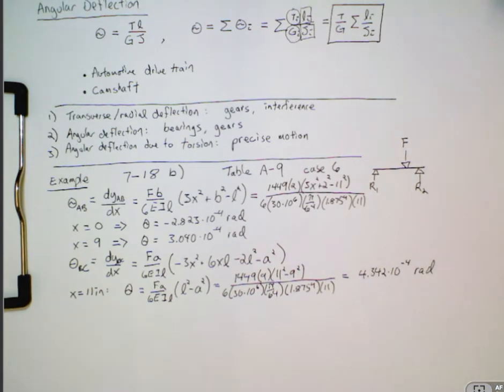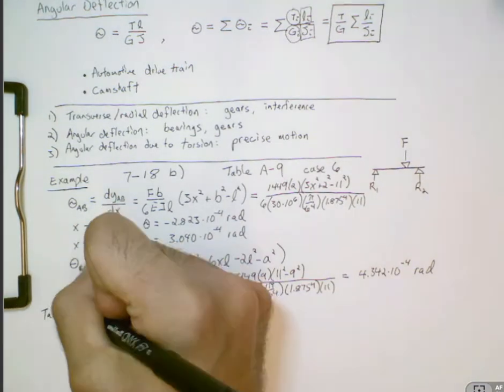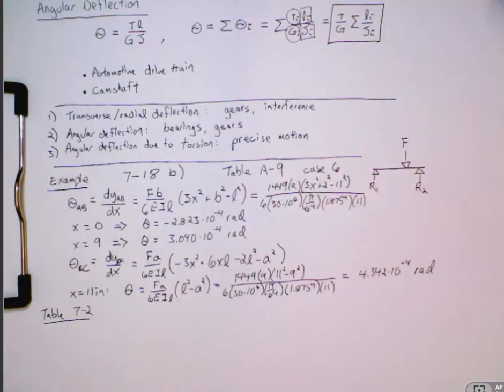So if we look at table 7-2, this gives us some recommended allowable slopes for different situations, for gears, for bearings, and so on. And this is a good thing to go from. If you're designing an actual system, I would recommend getting these recommendations from the actual manufacturer of the components to make sure you don't exceed their limits.